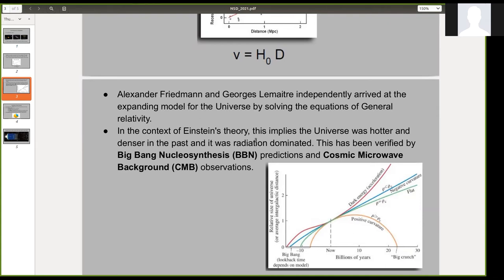And both these conclusions have been verified by BBN and CMB. So BBN or Big Bang nucleosynthesis is the production of light elements in early universe, and CMB is a faint microwave signal that we can detect from all directions.